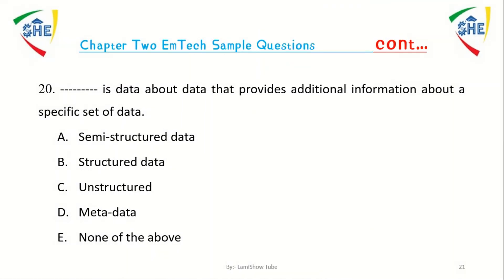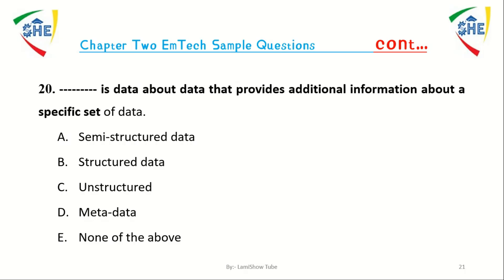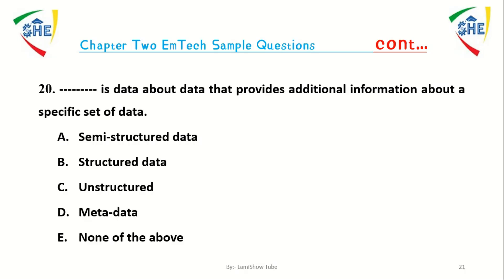Question number 20: Dash is data about data that provides additional information about a specific set of data. A) Unstructured data, B) Structured data, C) Semi-structured data, D) Metadata, E) None of the above.